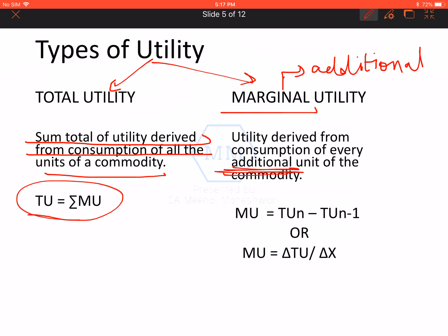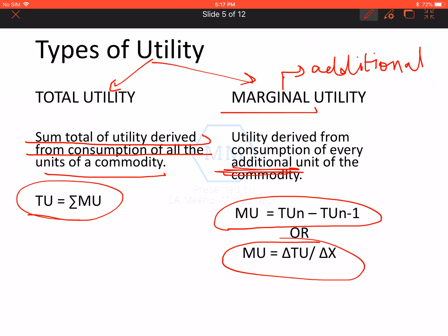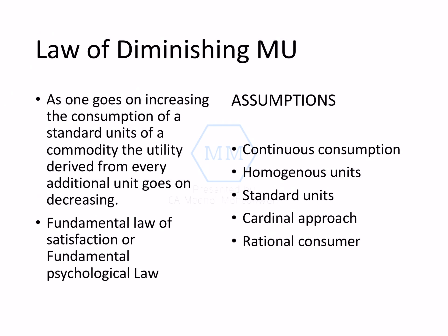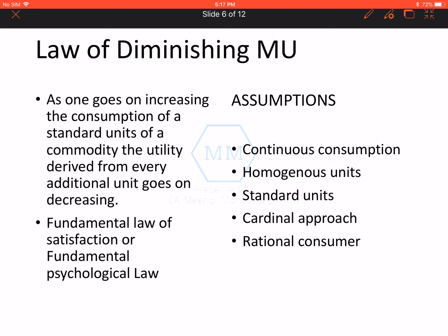The formula for TU is Summation of MU — if I add up all the MU values, I get Total Utility. The formula for MU is: TU(n) minus TU(n-1), or Change in TU upon Change in Q, where Q means number of units. We will understand this concept with the help of a numerical example.